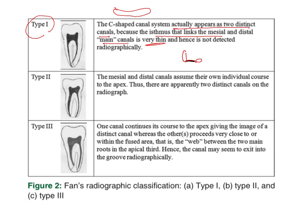Type 2: the mesial and distal canals assume their own individual courses to the apex, and they are apparently two distinct canals on the radiograph. That means you have your distal canal, your mesiobuccal, and your mesiolingual — they give a very normal appearance.